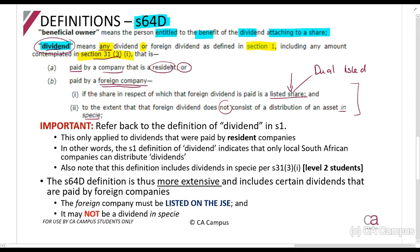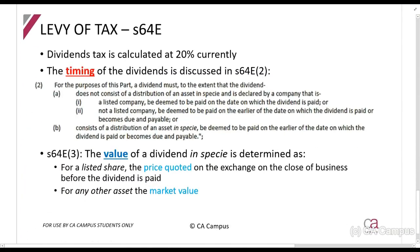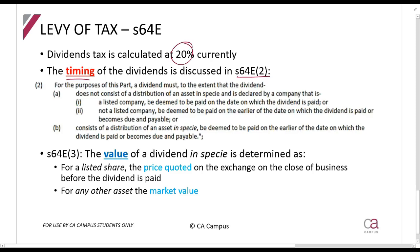Section 64E tells us how the dividend is calculated and when it is paid. Dividends tax is paid at 20 percent. For timing, assessed in section 64E(2): you need to know when the dividend was paid because the rule says you must pay the dividends tax by the end of the next month. For the purpose of this part, a dividend must — to the extent that the dividend does not consist of an asset in specie — follow rule (a), while rule (b) applies to a dividend in specie.